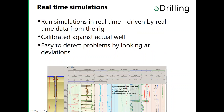Real-time simulations occur when real-time data from the rig drives the simulator, which is then calibrated against the actual well, making it easy to detect problems by looking at deviations. For example, a drop in measured standpipe pressure from the sensor compared to calculated standpipe pressure from the simulator indicates a washout in the drill string. This is a typical way to get value from running real-time simulations.